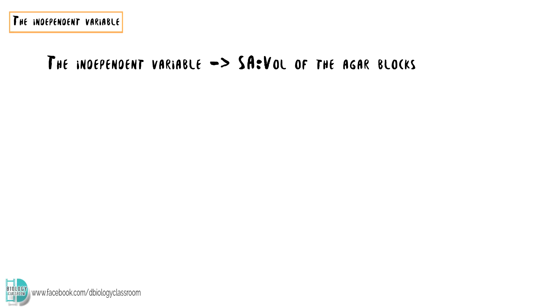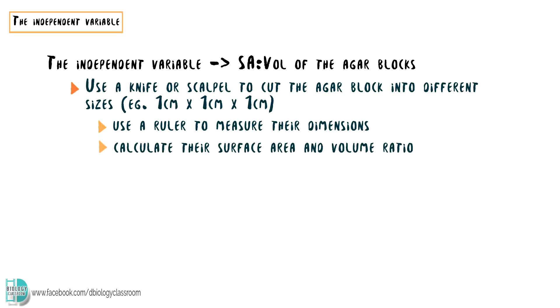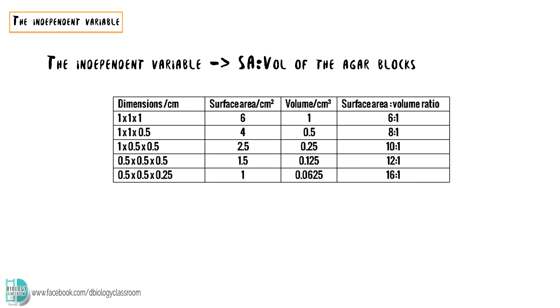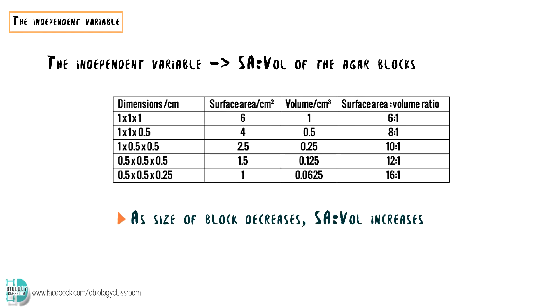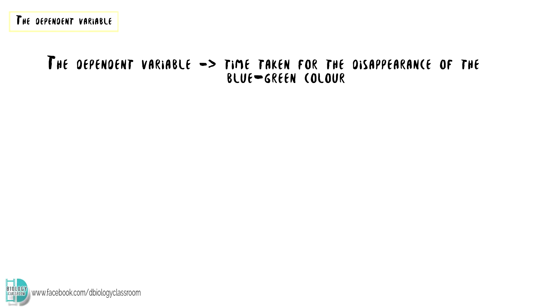The independent variable is the surface area to volume ratio of the agar blocks. Use a knife or scalpel to cut the agar block into different sizes. You should use a ruler to measure their dimensions. After that, you can calculate their surface area to volume ratio. Prepare 5 different sizes for the experiment. Notice that the smaller the block is, the greater the surface area to volume ratio is.